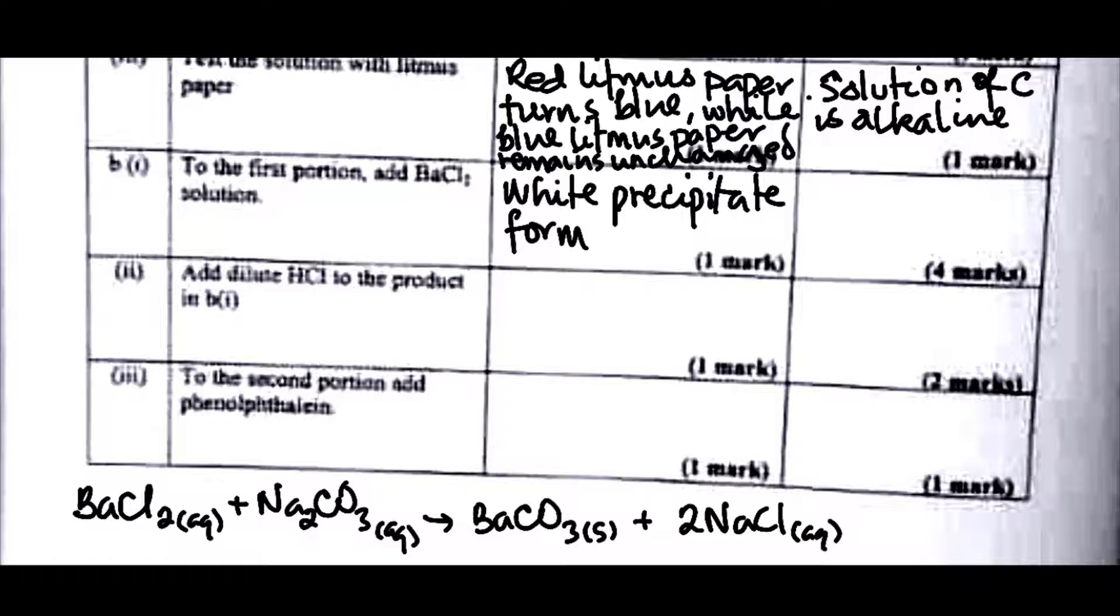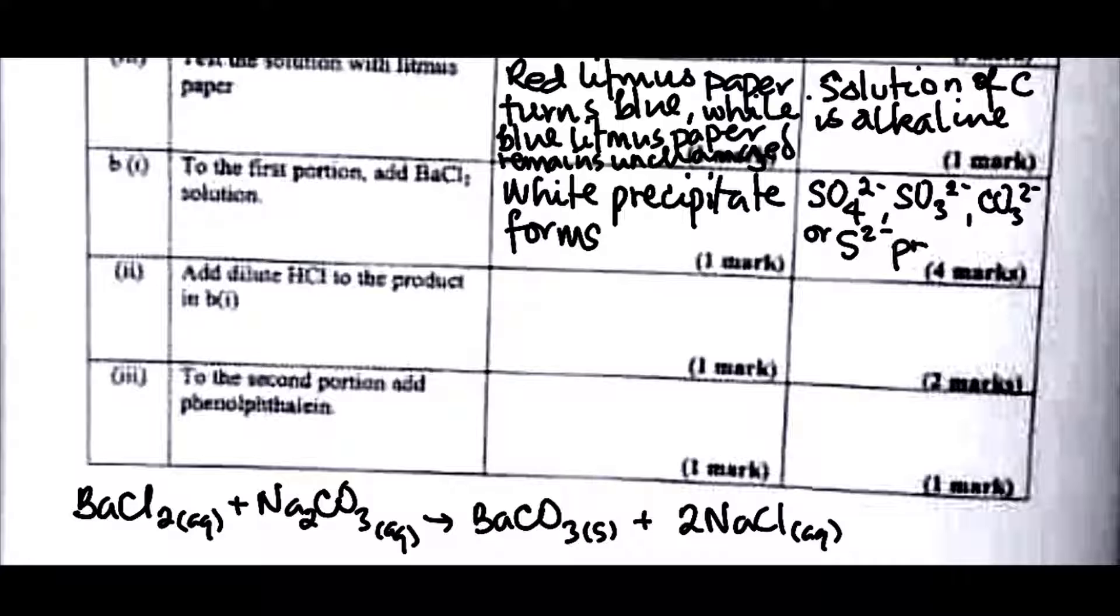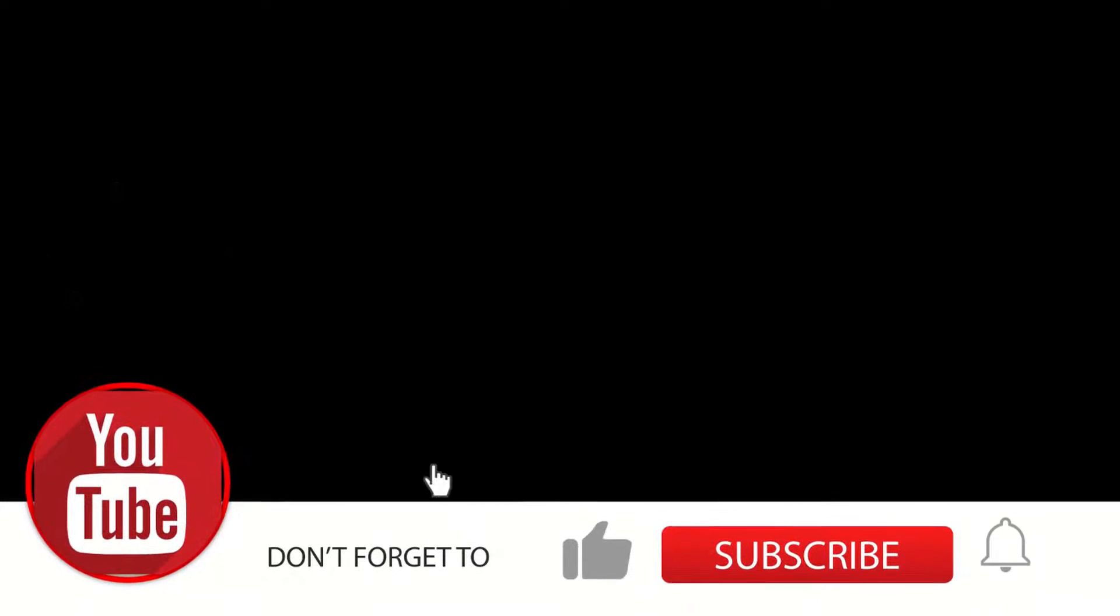What do we infer here? For white precipitate to be formed when BaCl2 is added, there are likely going to be four ions. It can be SO4²⁻, it can be SO3²⁻, it can be CO3²⁻, or it can be S²⁻ present. Any of these four can be present.